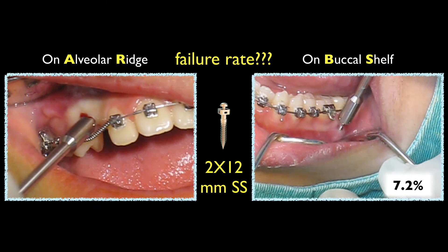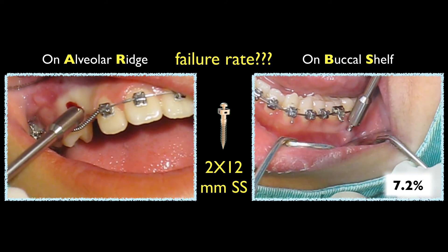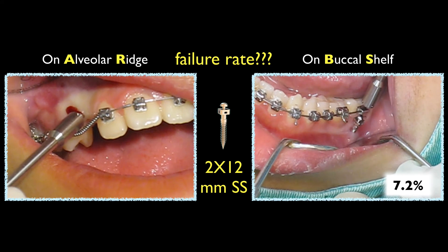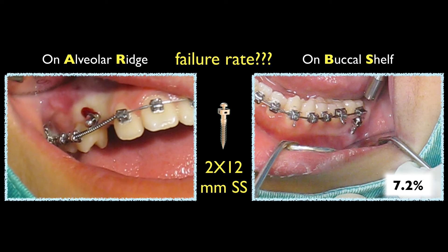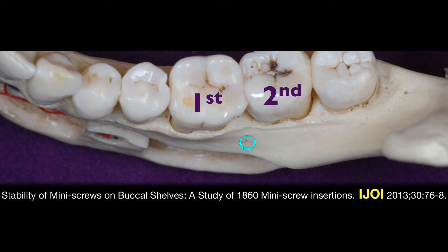You may wonder: you are putting a screw in young kids — is that stable? Don't worry. Dr. Robert and I did a study, and we found the overall failure rate is 7.2 percent, and a lot of those patients are young kids.